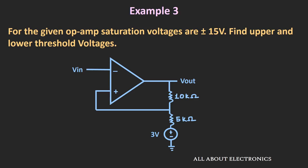Now in the next example, we have been given a circuit designed using an op-amp. The saturation voltages are ±15V, and we need to find the upper and lower threshold voltages. Observing this circuit, it is an inverting Schmitt Trigger because the input is at the inverting terminal and there is positive feedback from output to input. The voltage at the non-inverting terminal, V+, will define the thresholds.